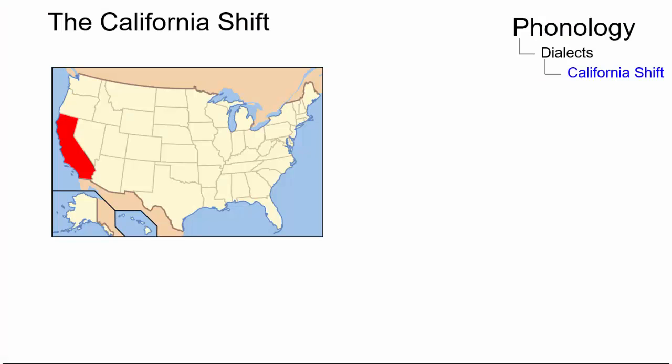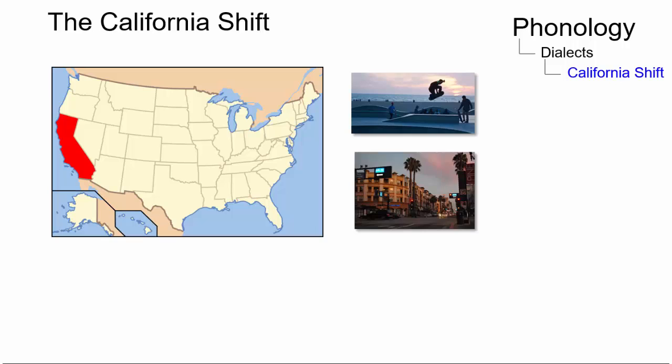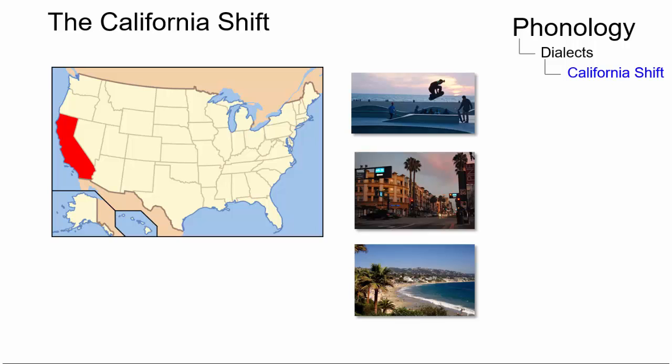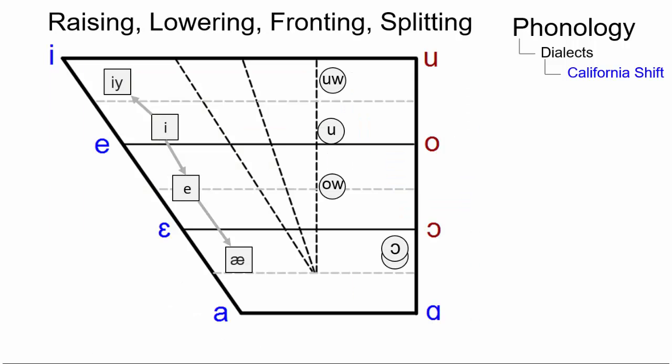The California shift has been going on in California English for the past decades. It is mostly attributed to young urban and coastal speakers and is not universal within nor limited to the California area. It can be described as a lowering chain shift. Here are the phonological details.